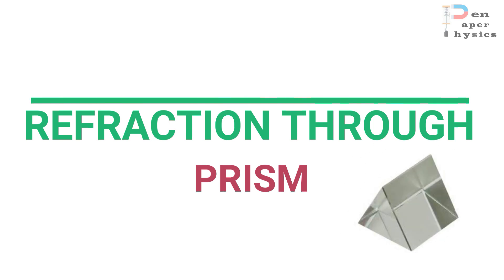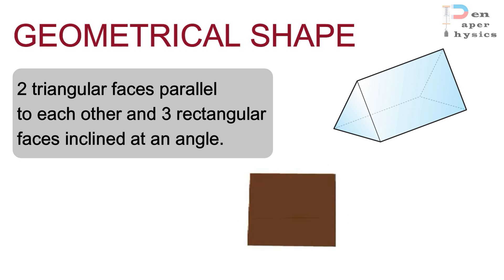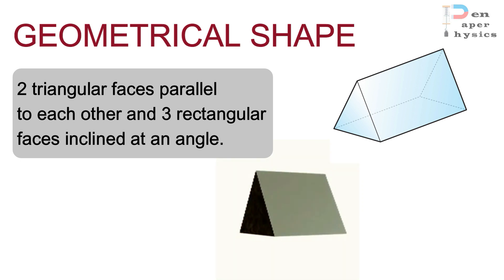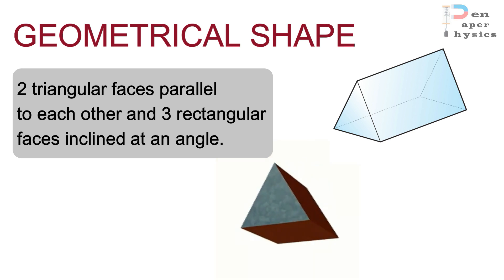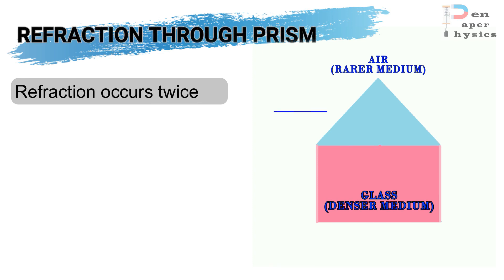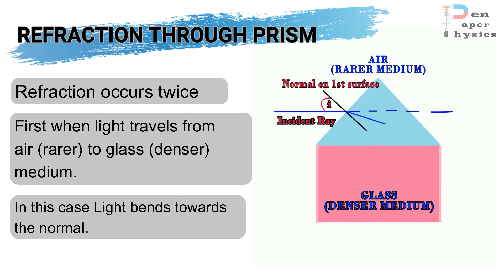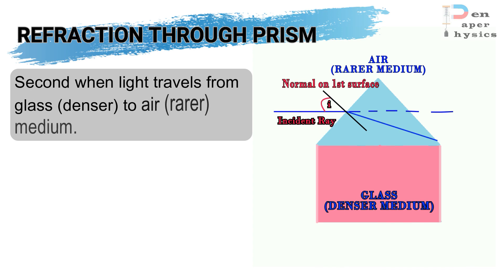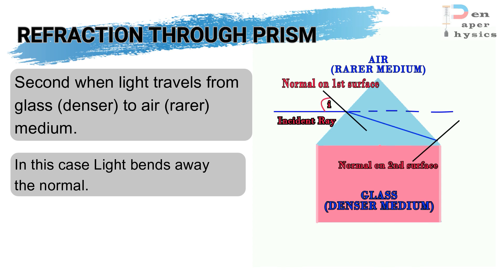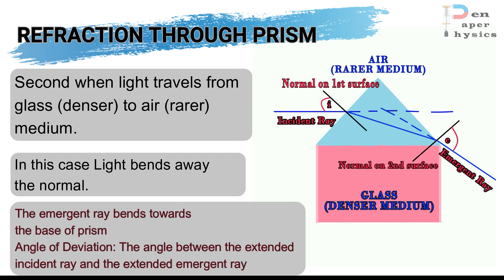Let us now discuss refraction through a prism. A triangular prism has two triangular faces parallel to each other and three rectangular faces inclined at an angle. When a light ray is incident on the first surface of the prism, it refracts and since light is traveling from rarer to denser medium, it bends towards the normal. After traveling through the prism, when the light ray reaches the opposite surface, it refracts again from denser to rarer medium and bends away from the normal. Extending the emergent ray backwards to intersect the extended incident ray gives the angle of deviation.